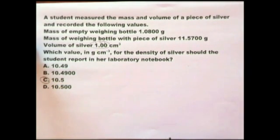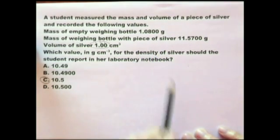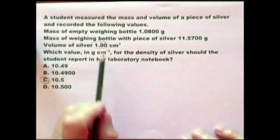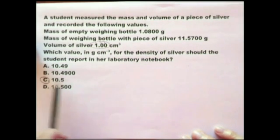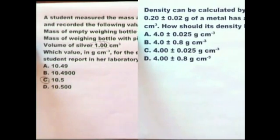This rule is for multiplication and division. Density implies you've done a division — you've divided the mass by the volume. So for multiplication and division, you look for the minimum number of significant figures, and that tells you the answer.